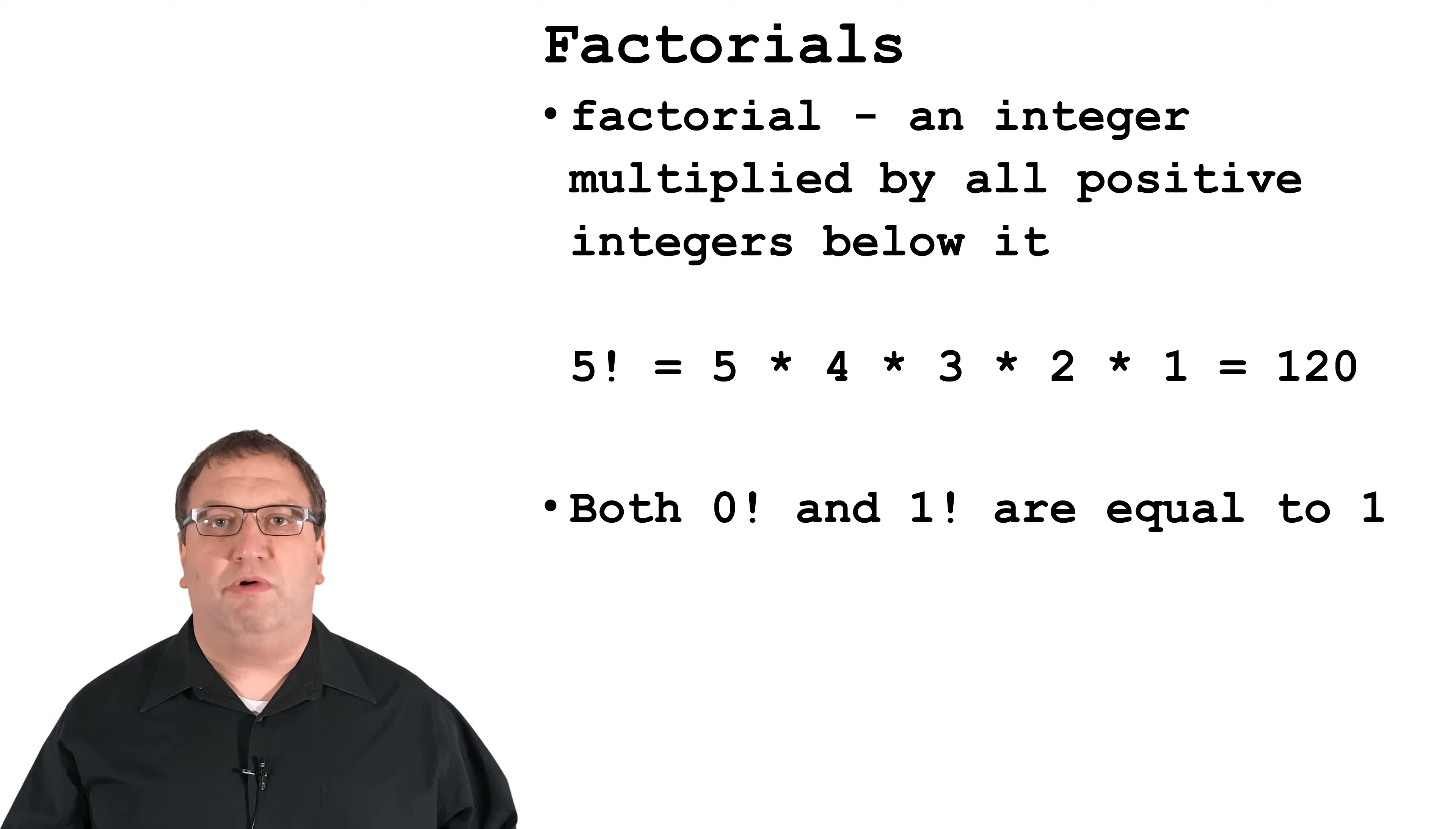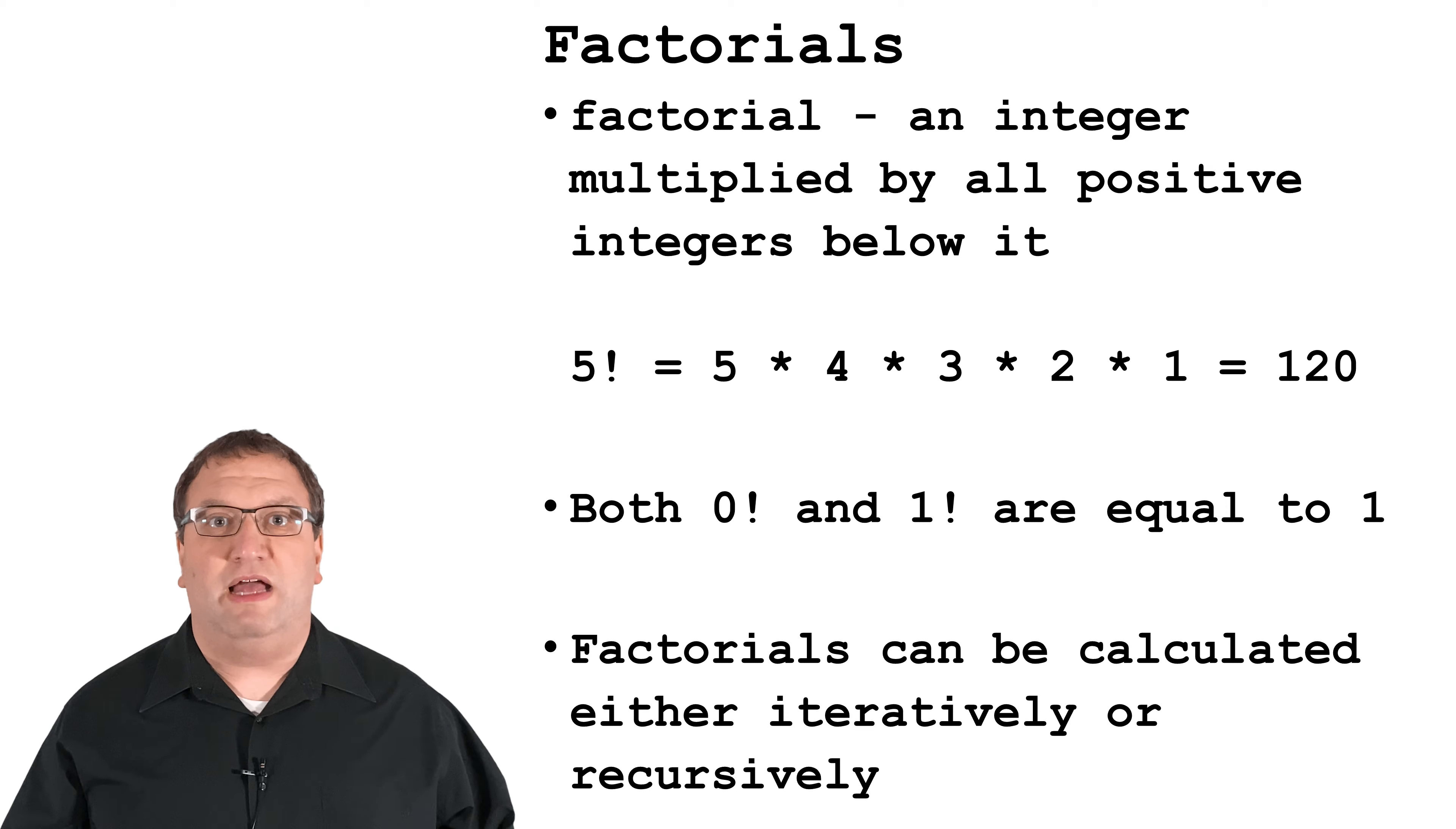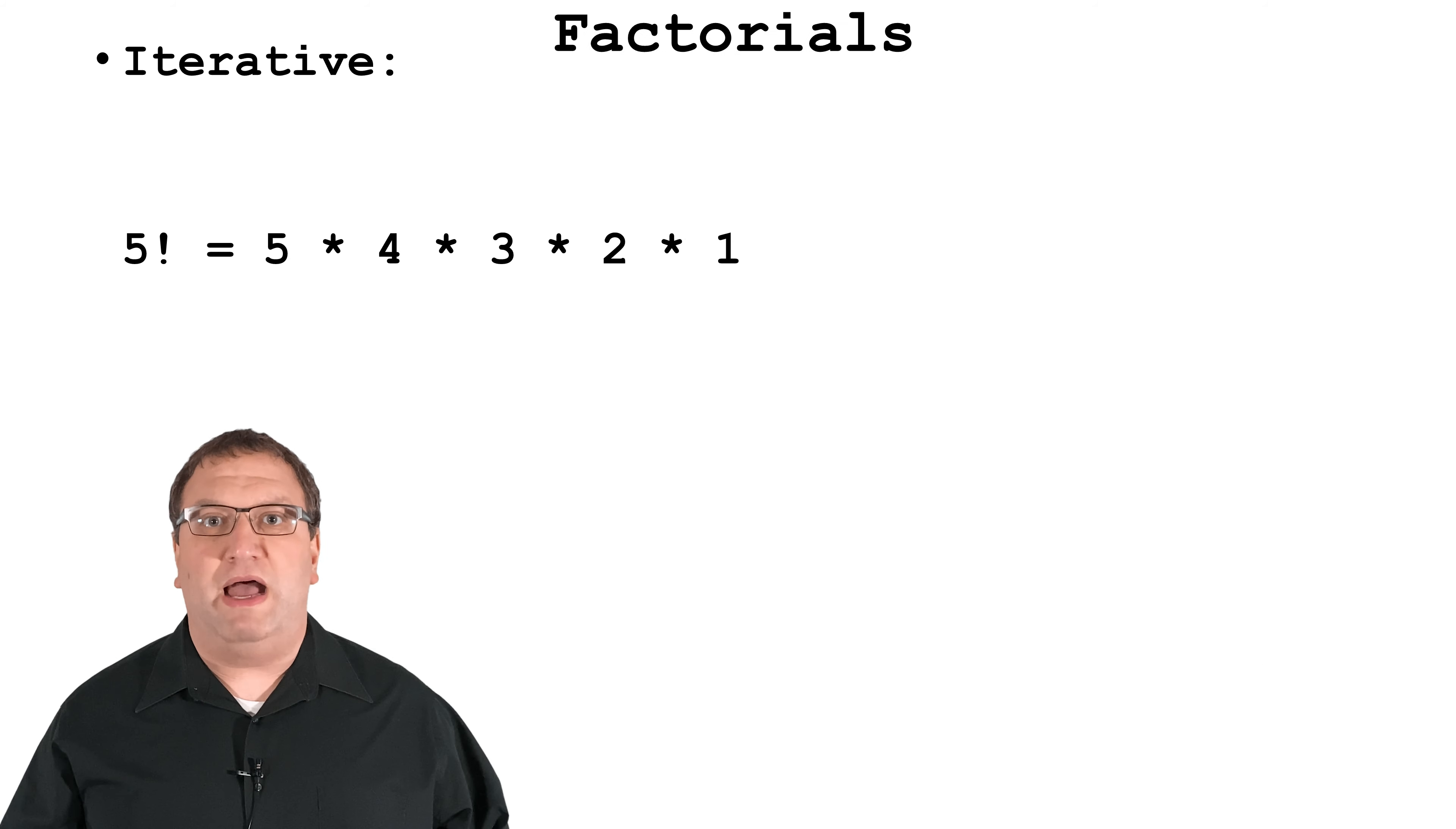For example, 5 factorial is 5 times 4 times 3 times 2 times 1, which equals 120. Both 0 factorial and 1 factorial are equal to 1. This will be important later.